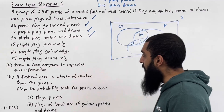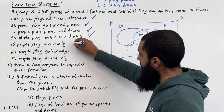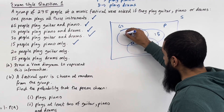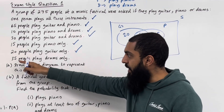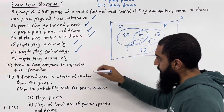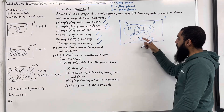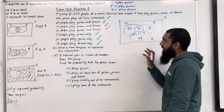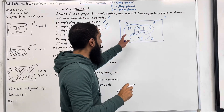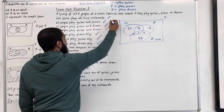Fifteen people play piano only, so that section is 15. Twenty people play guitar only, so that section is 20. And 35 people play drums only, so that section is 35. We must also label the outside: we add up all these numbers and take the result away from 275. That gives us 102 for the outside. This completes Part A of exam style question 1.